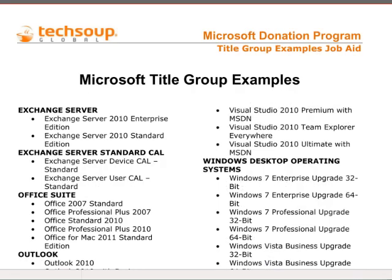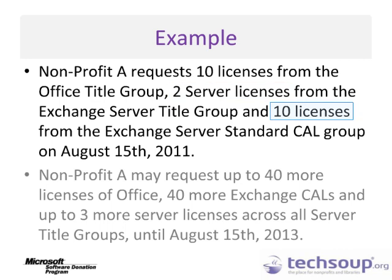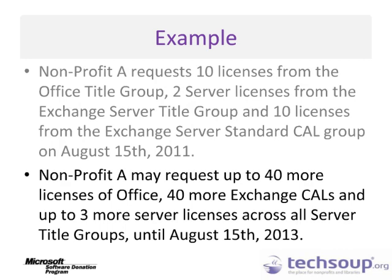Organizations may request products from up to 10 of the Microsoft Title Groups with up to 50 licenses per Title Group. For example, Nonprofit A requests 10 licenses from the Office Title Group, 2 server licenses from the Exchange Server Title Group, and 10 licenses from the Exchange Server Standard CAL Group on August 15, 2011. This same nonprofit may then request up to 40 more licenses of Office, 40 more Exchange CALs, and up to three more server licenses across all server Title Groups until two years later on August 15, 2013.